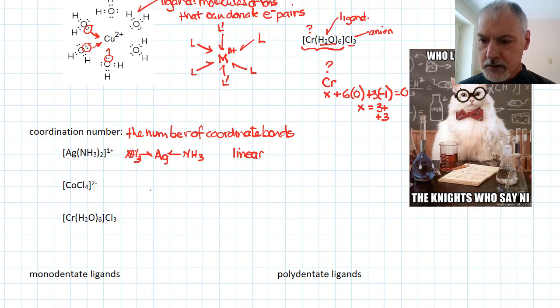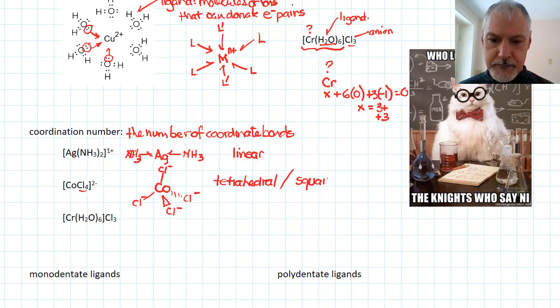Cobalt, here with four chlorines attached to it, would probably arrange itself in something like a tetrahedral-like shape, with each chlorine minus here on the outside. Now, if I replace chlorine with a larger species, say like ammonia or water, it is also possible to form square shapes. So when you tend to have four ligands attached in the center, it will either form a tetrahedral or a square shape. Generally, as I say, square shapes tend to be with larger species.